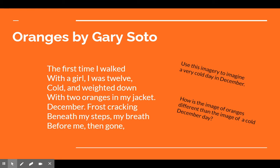The first time I walked with a girl I was 12. Cold and weighted down with two oranges in my jacket. December. Frost cracking beneath my steps. My breath before me then gone. Use this imagery to imagine a very cold day in December. I also have a note here that says, how is the image of oranges different than the image of a cold December day? I want you to start thinking about a metaphor here — a comparison of two unlike things.